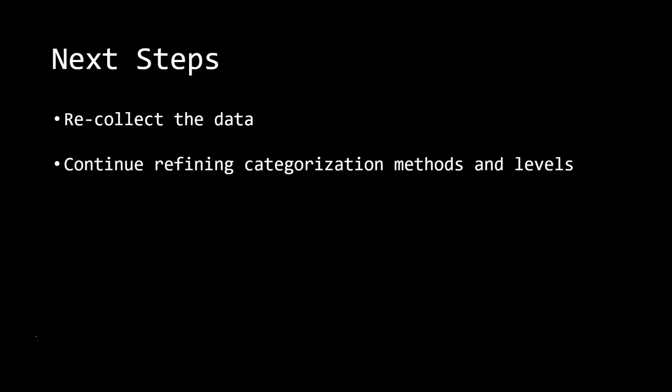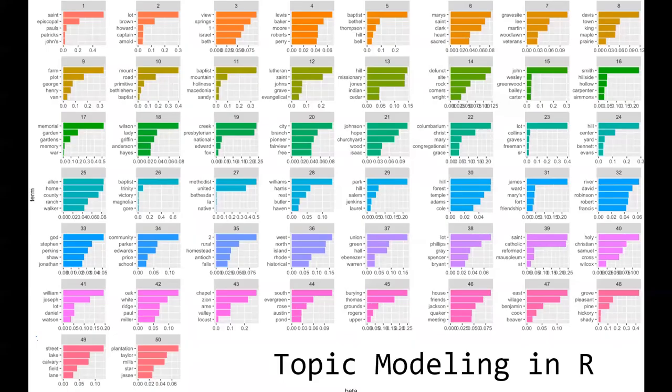Next steps include recollecting the data and continuing to work on my categorization methods. Once I have alternate known names of cemeteries, this might become easier because I'll have more information to go on. Descriptions will also allow me to look for more information about what type of cemetery each site is. I also tried my hand at a little bit of topic modeling — it didn't yield very much yet and still needs a lot of work, since 50 clusters is way too many to comprehend.